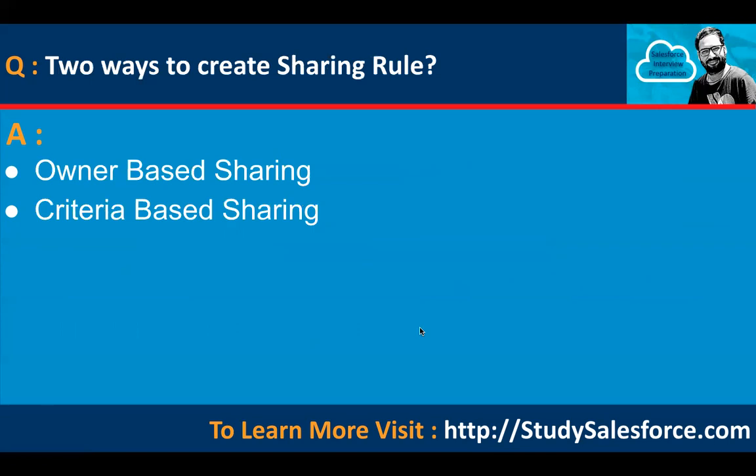There are two ways to create sharing rules. First is owner-based sharing, where the record owner is the criteria. Second is criteria-based sharing, where you can use any field as the criteria, and record sharing is done based on that criteria.